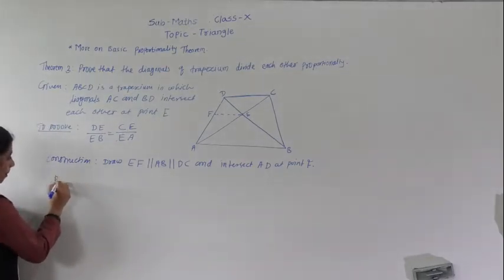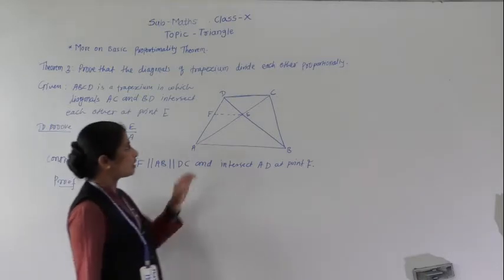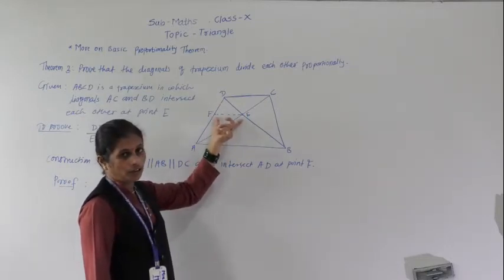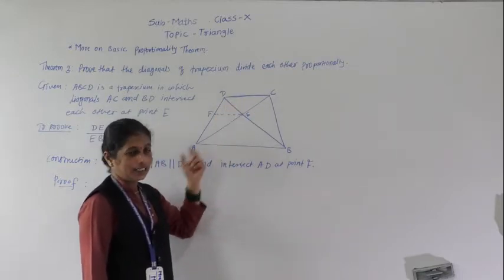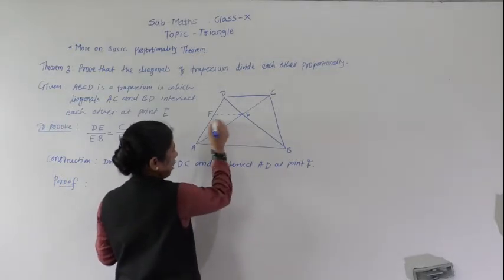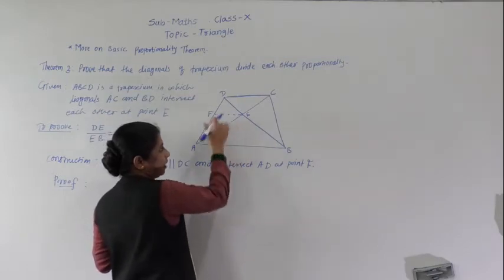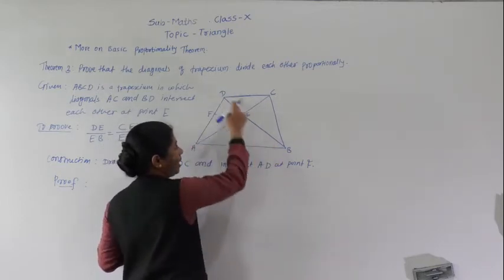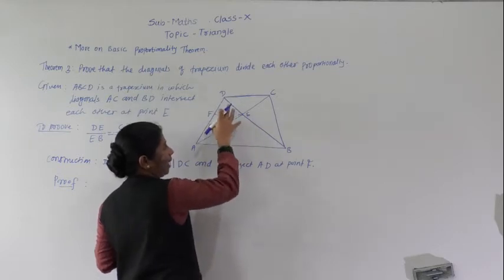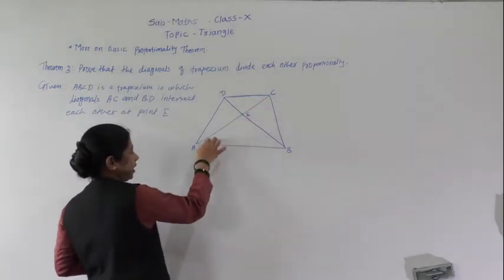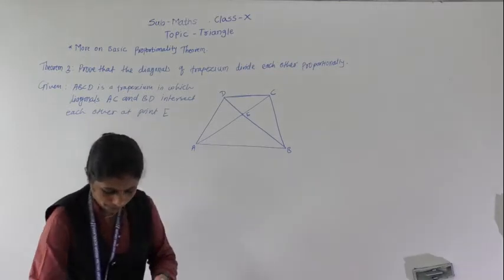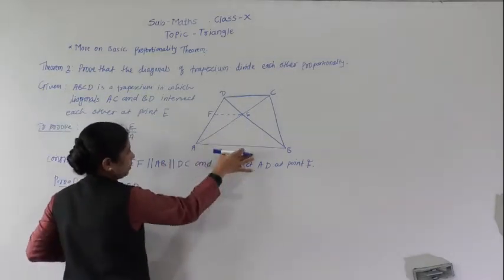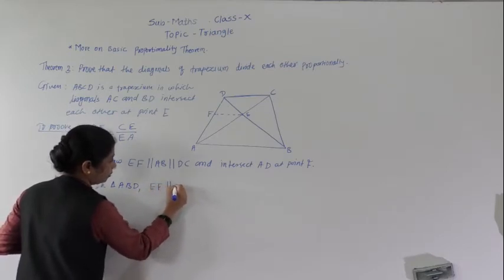Now, in triangle ABD, EF is parallel to AB. By the Basic Proportionality Theorem, when EF is parallel to AB in triangle ABD, we get DF upon FB equals DE upon EB.